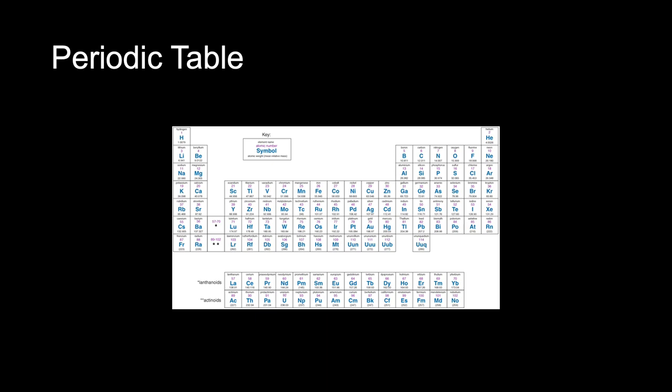Atoms in each group have the same number of electrons in the outermost shell. The number of electrons in the outermost shell increases as one moves from left, group 1, to the right, group 8. The periodic table is not perfectly uniform — in the middle of the chart are a number of elements that do not easily fit into the eight groups. These are called the transitional metals, in which the inner electron shells are being filled, and they have some characteristics different from all other elements.